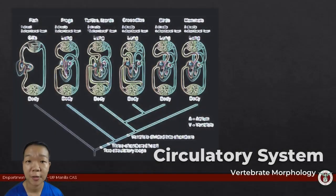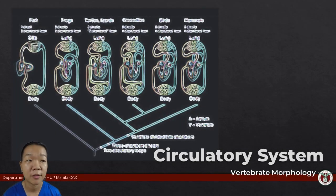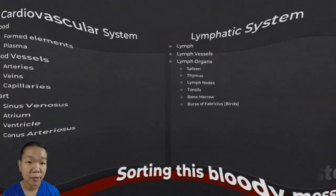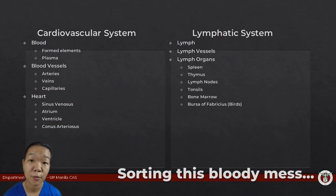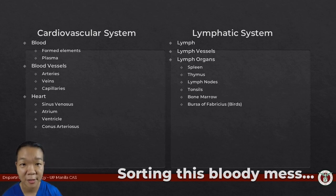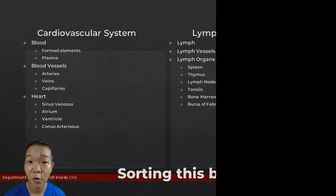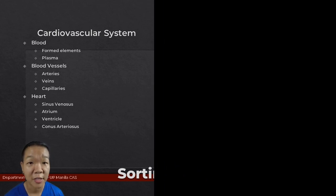You've got the nutrients and the gases, but if there's no way to distribute them to the rest of the organ systems, then GG. This is exactly what the circulatory system is for. And contrary to what most people know, the circulatory system is actually composed of two separate systems: the cardiovascular system and the lymphatic system. And while we will sort of touch on both, we will focus more on the cardiovascular system.